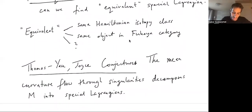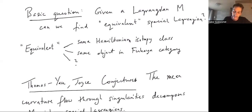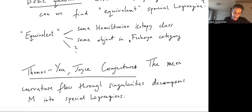But in any case, the program that I'm concerned with in these talks is the following, going back to Thomas and Yau, and refined and elaborated greatly by Dominic Joyce. Very roughly speaking, the conjecture says that the way that we should try to find an equivalent special Lagrangian to M is to run the mean curvature flow with initial condition M, and then see what happens. The Joyce conjecture is a detailed picture describing how one could try to run the mean curvature flow through singularities with various surgeries, and eventually hope to decompose M into special Lagrangians.